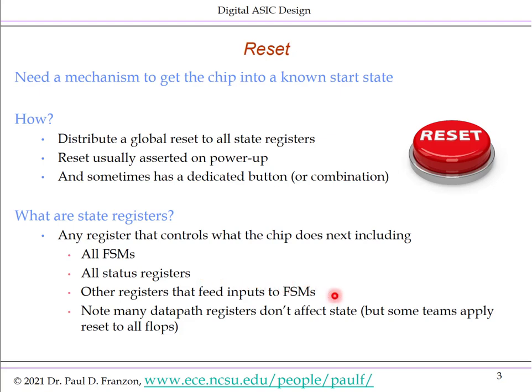In general, other registers that feed inputs to finite state machines or counters must also have reset applied to them. Many datapath registers don't affect state, so they don't need reset. For example, registers in a datapath that are there solely to add pipeline stages — intermediate pipeline stages don't need reset applied to them. That said, some teams have a dogma that reset must be applied to all flops; this increases chip size but is very safe.